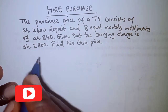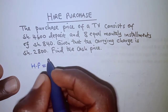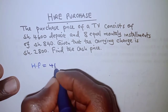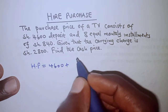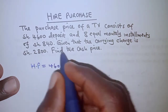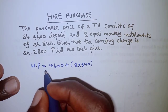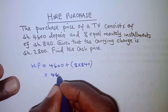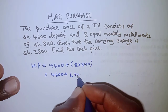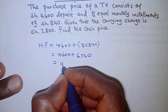Before we find the cash price, we need to calculate the hire purchase price. The hire purchase price is obtained by simply adding the deposit — which is 4,600 — plus the total installments. We have 8 installments, each at 840, giving 6,720. Summing up, we get 11,320.